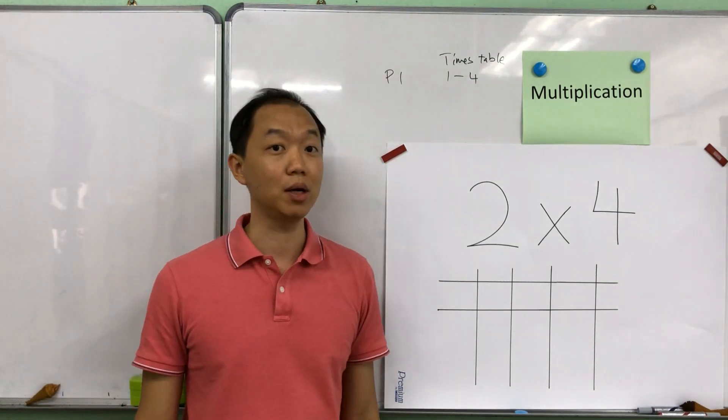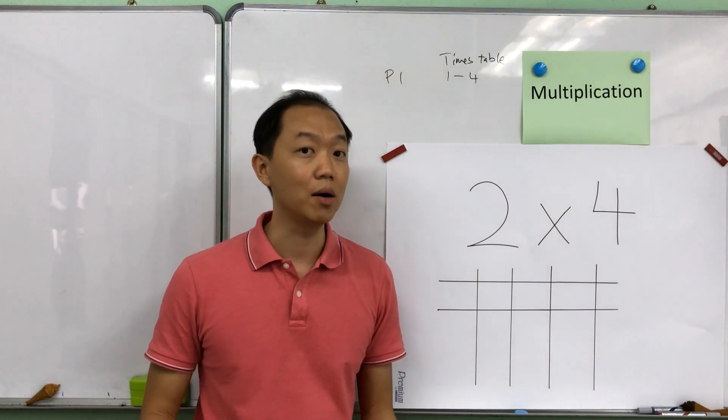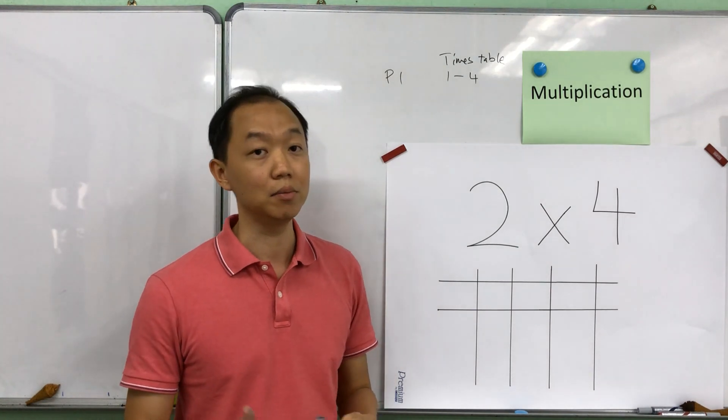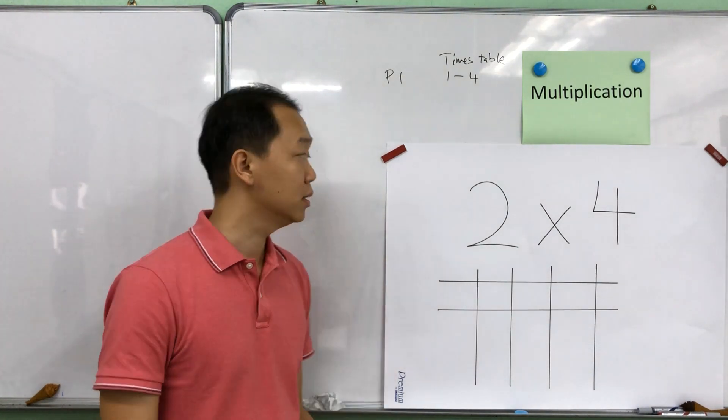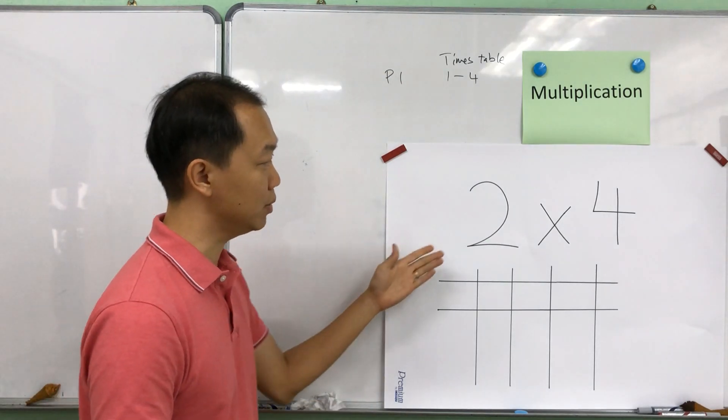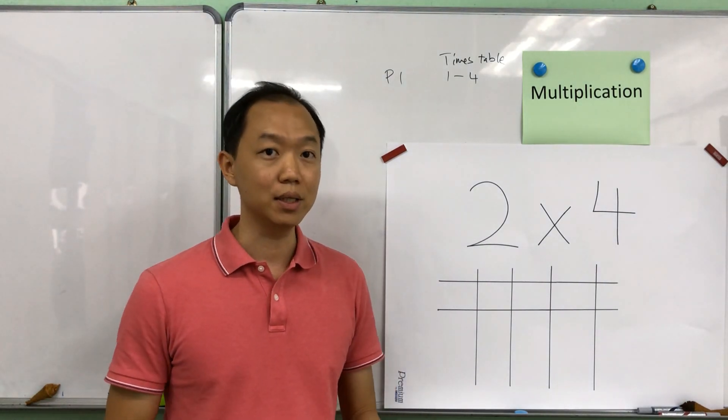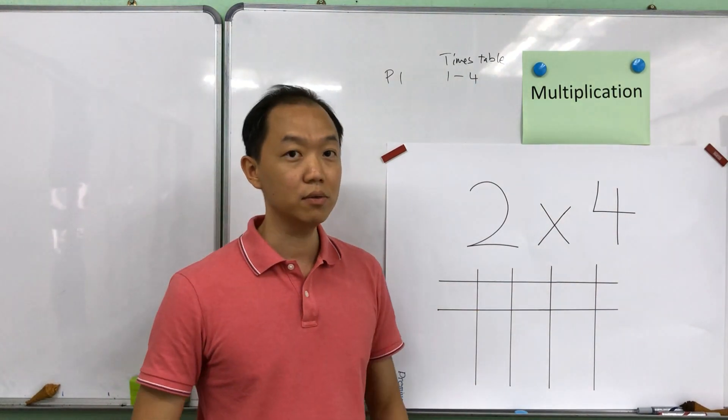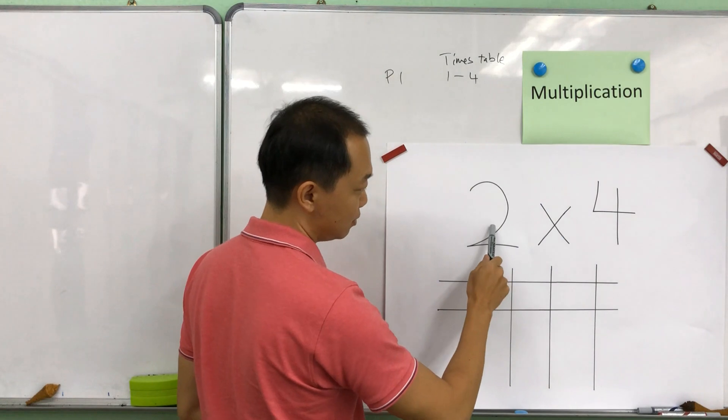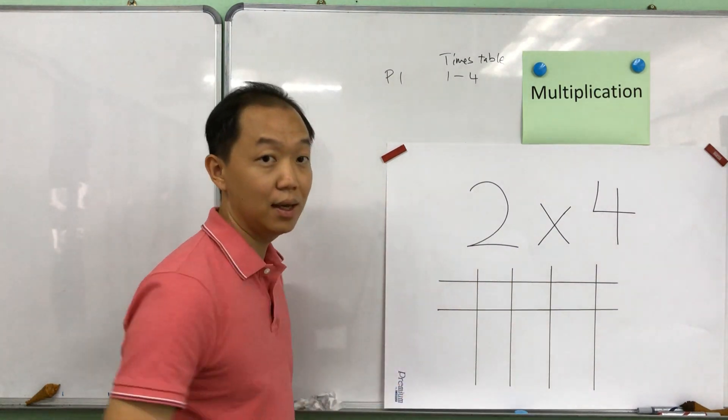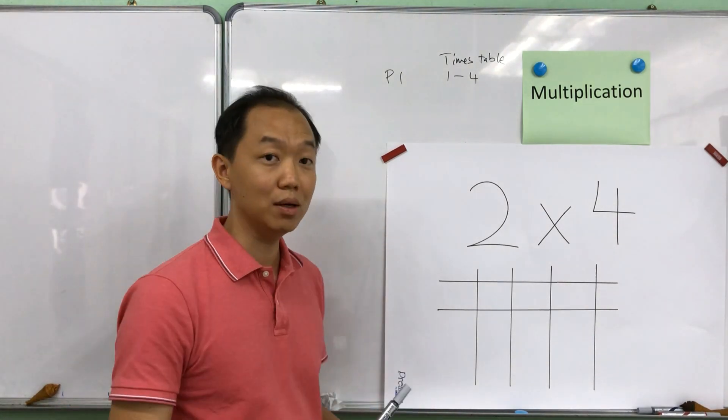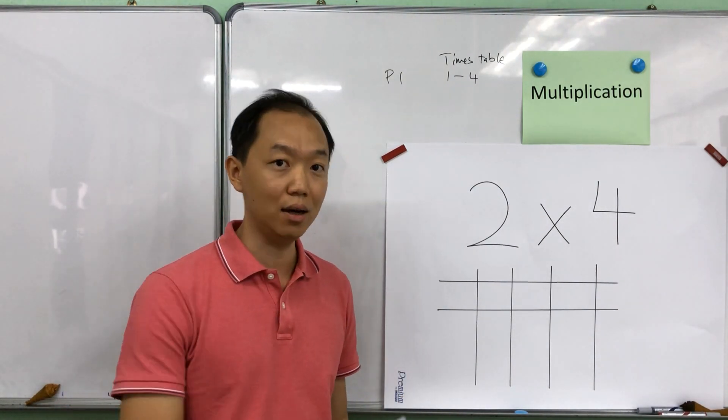So let me just explain for the primary one first how we are going to carry out this thing. For P1 we want them to be familiarized with the times table from 1 to 4. Now how we are doing it is we have flip charts like that and I'm going to demonstrate how to execute a multiplication which is 2 times 4. So for 2 times 4 all you have to do is draw 2 horizontal lines followed by 4 vertical lines. And for the answer what you do is you calculate the number of intersections.